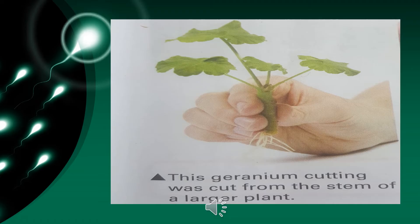Humans have grown plants asexually for hundreds of years by cutting pieces of plants they like and growing them into new plants. This procedure is known as propagation, and the new plants are called cuttings. In this slide you can view the cutting of a geranium plant with an established root system. This geranium cutting was cut from the stem of a larger plant.